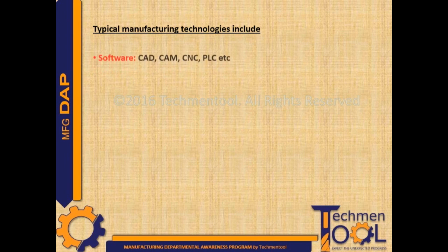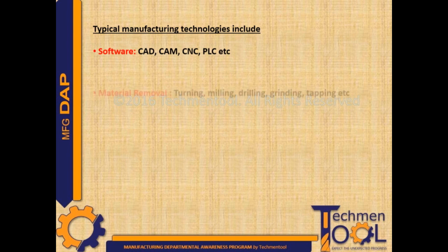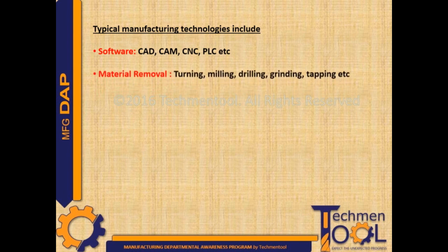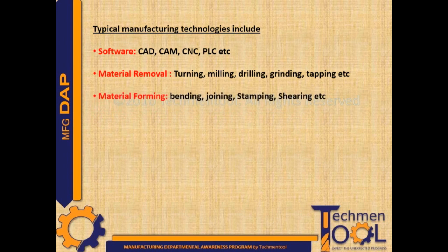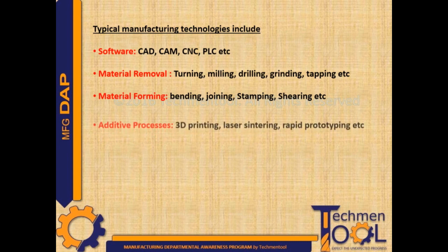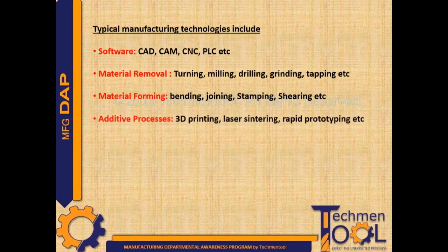Let us discuss typical manufacturing technologies. Software includes CAD (Computer Aided Drawing), CAM (Computer Aided Machining), CNC (Computer Numerical Control), PLC (Programmable Logic Control), etc. Material removal includes turning, milling, drilling, grinding, tapping, etc. Material forming includes bending, joining, stamping, shearing, etc.